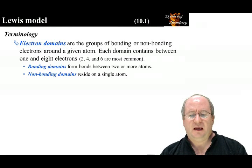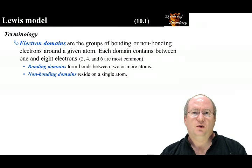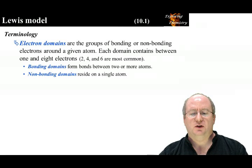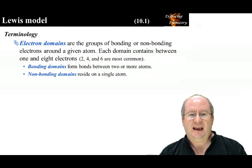An electron domain is a group of bonding or non-bonding electrons. Bonding domains exist between two or more atoms. Non-bonding domains exist on a single atom. Each domain can contain up to eight electrons, with two, four, or six electrons being common.